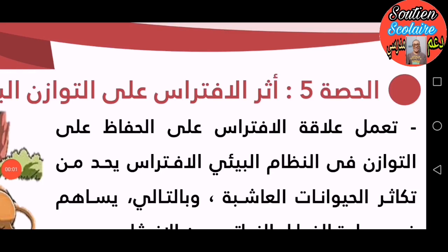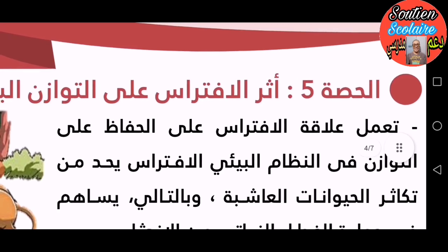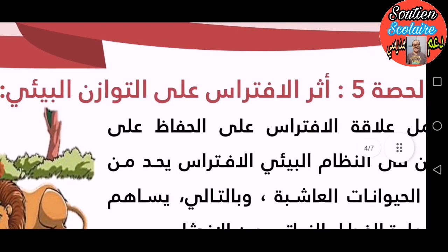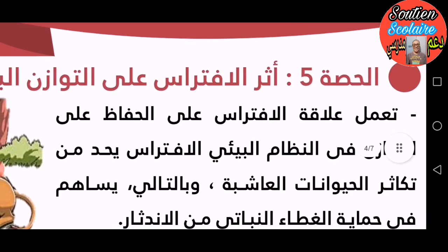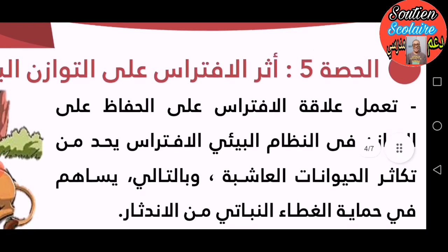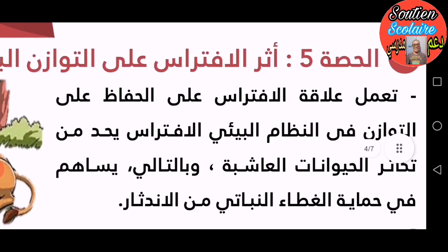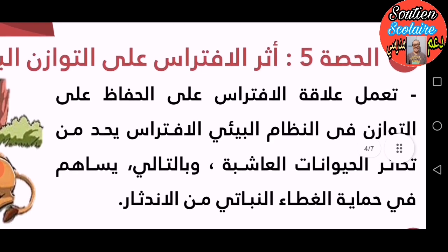الحصة الخامسة: أثر الافتراس على التوازن البيئي. تعمل علاقة الافتراس على الحفاظ على التوازن في النظام البيئي، فالافتراس يحد من تكاثر الحيوانات العاشبة، وبالتالي يساهم في حماية الغطاء النباتي من الاندثار.